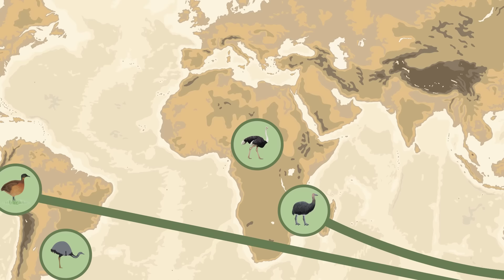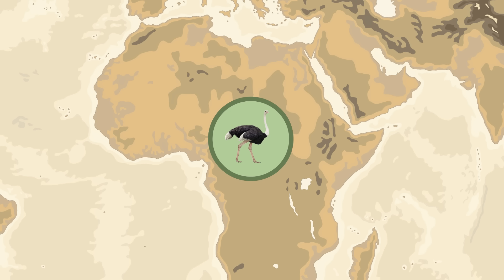And ostriches turned out not to be closely related to any of the others, belonging instead to their own lineage that branched off from the rest much earlier. Now, this genetic data not only revealed which birds were more closely related, it also showed when their evolutionary paths diverged from each other — using the molecular clock method.